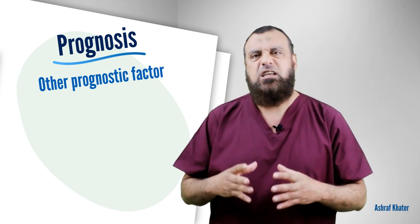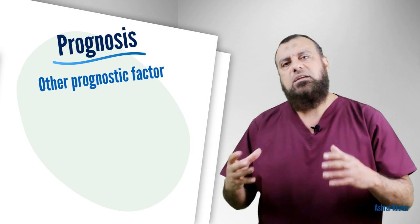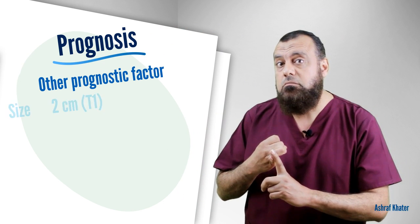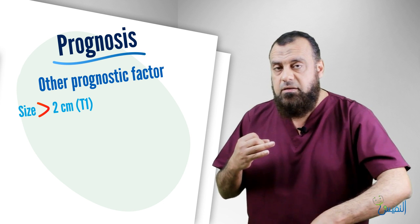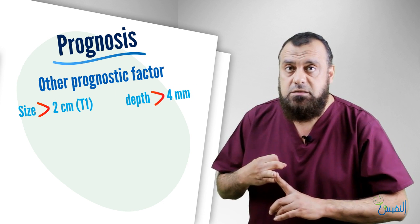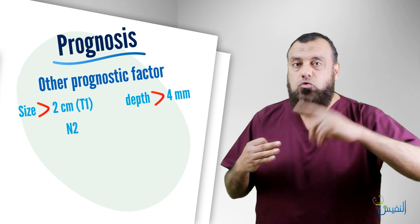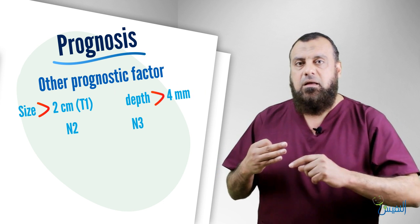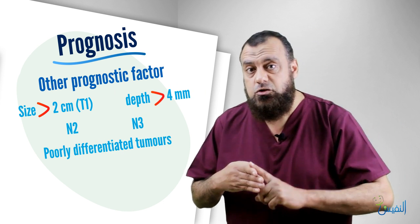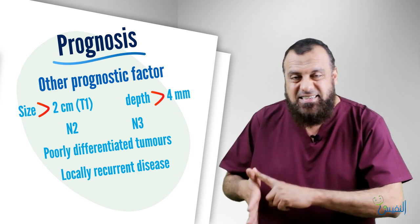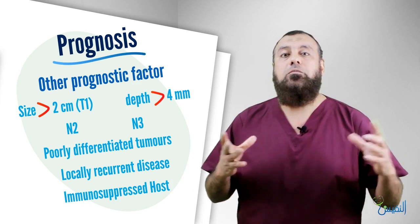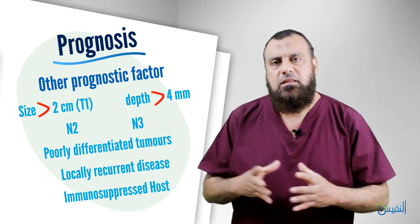Other prognostic factors: the prognosis is worse if the tumor is beyond T1, beyond 2 cm; if the depth is more than 4 mm; if there is N2 or N3; if there is a poorly differentiated tumor; if there is recurrent or metastatic disease; or if there is immune compromise, for example in a patient with HIV positivity.